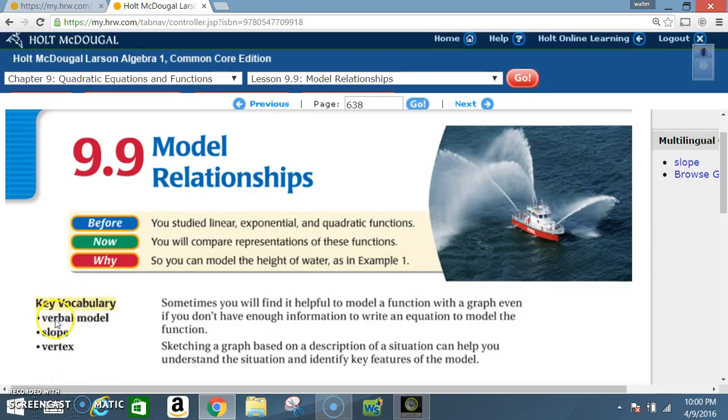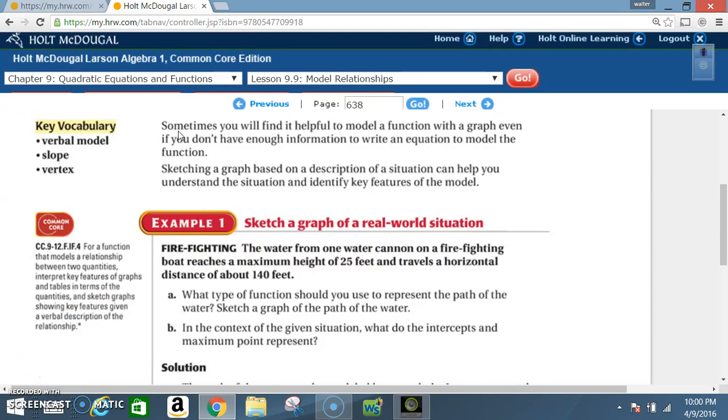Key vocabulary: verbal model, slope, and vertex. Sometimes you will find it helpful to model a function with a graph even if you don't have enough information to write an equation to model the function. Sketching a graph based on a description of a situation can help you understand the situation and identify key features of the model.